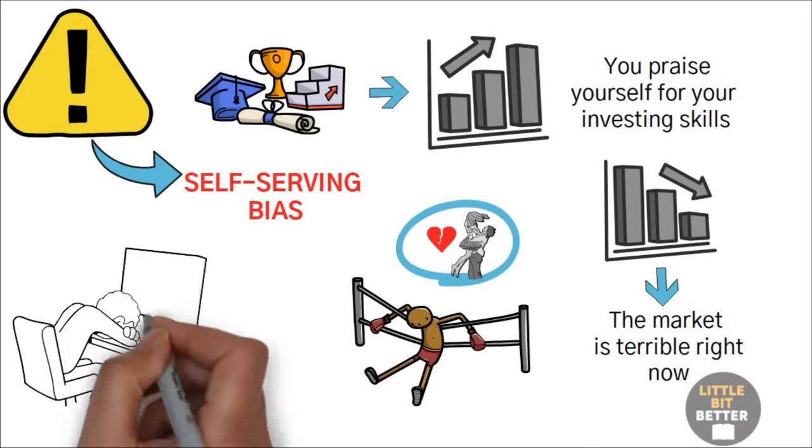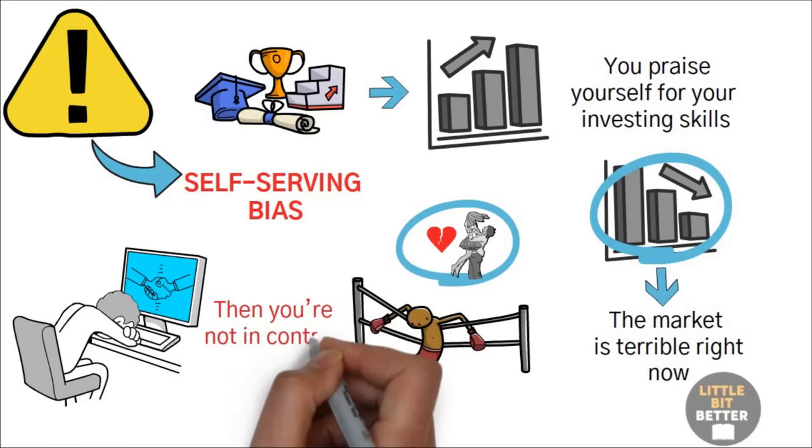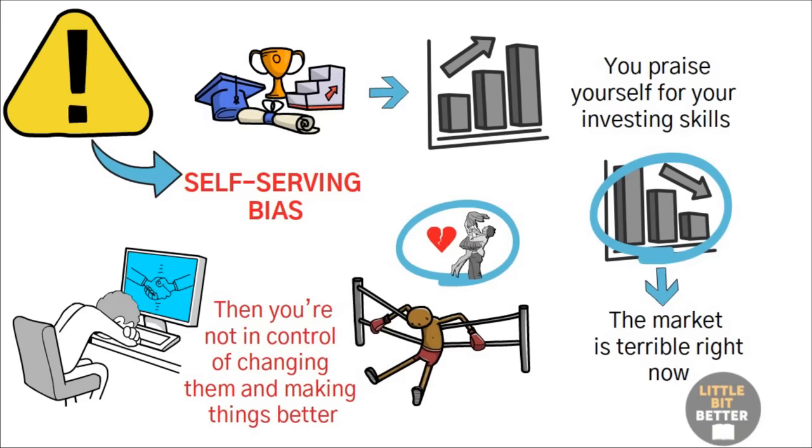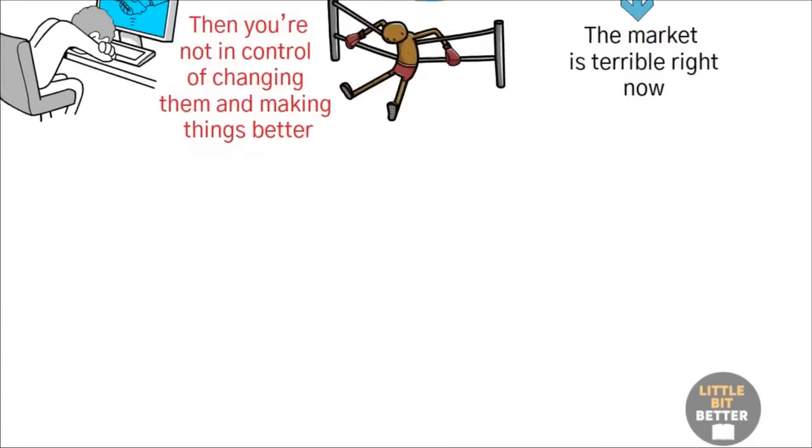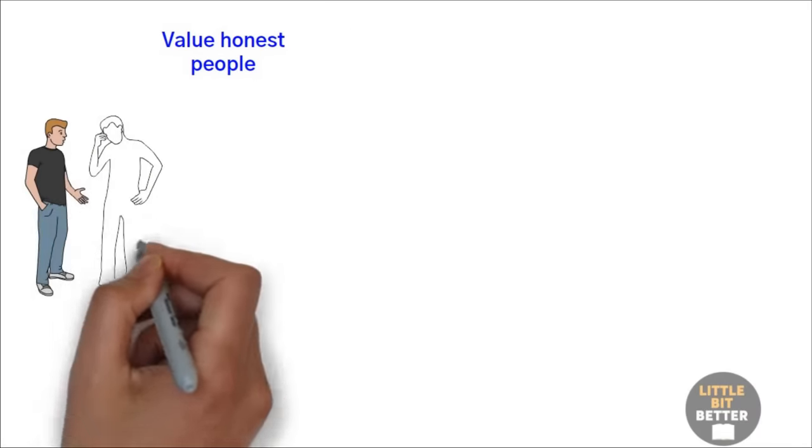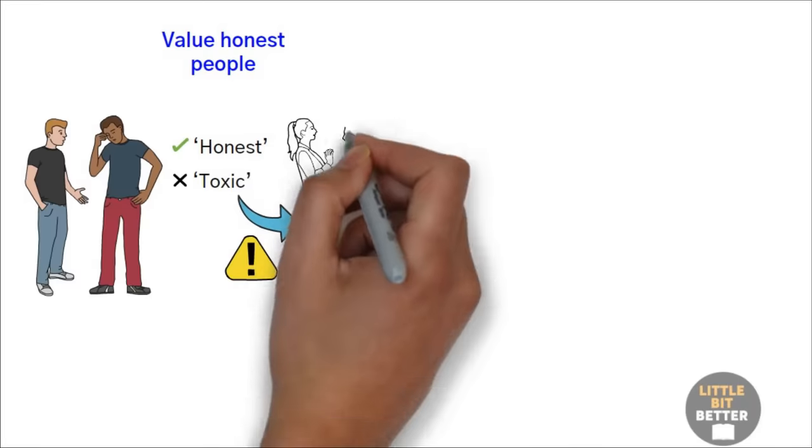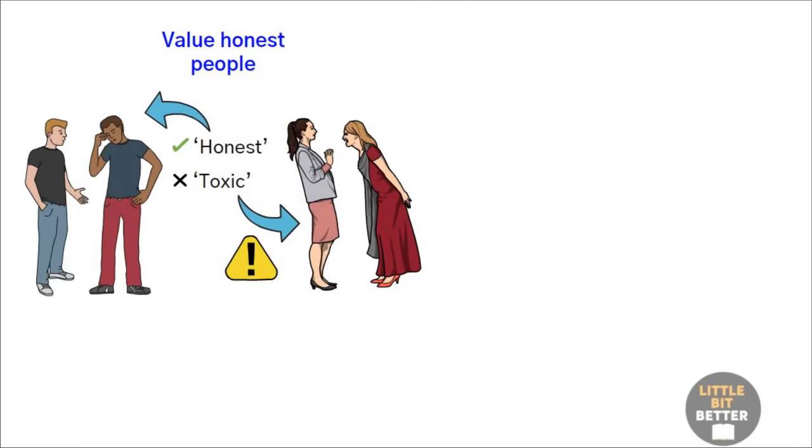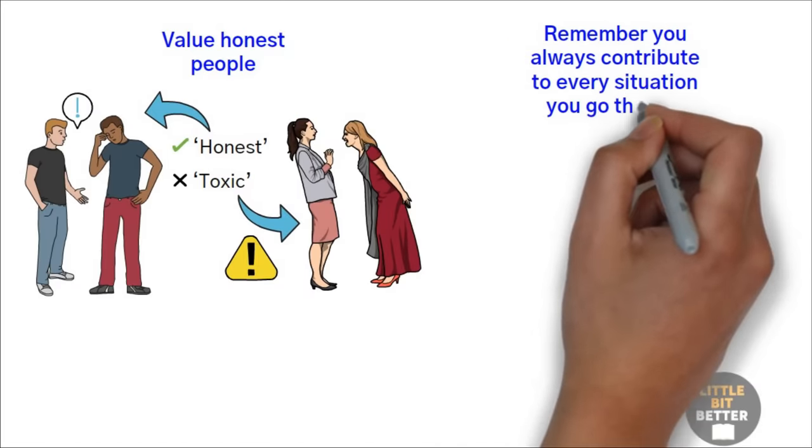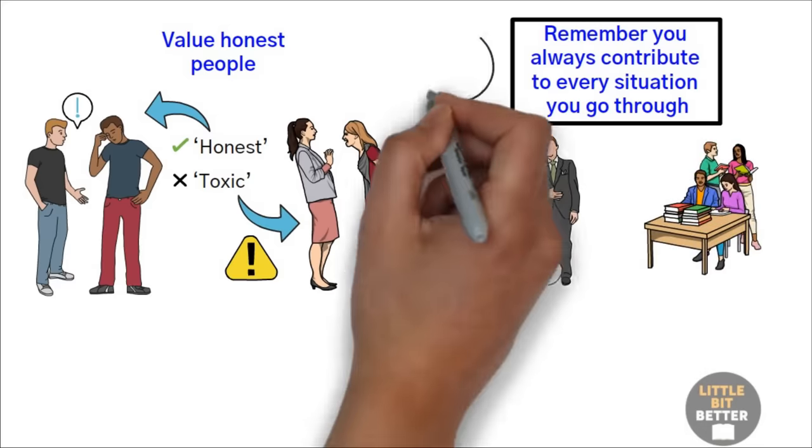If you often fall victim to this bias, it has terrible consequences that you don't always realize. It prevents you from taking responsibility for the negative events of your life. And if you're not responsible for them, then you're not in control of changing them and making things better. Here are two tips to help you avoid being harmed by self-serving bias. Value honest people. You know that friend who is maybe a little too honest? Keep them around. Keep in mind that honest is different from toxic. Toxic people will project their own flaws onto you. Honest people will be gentle and careful, but will still tell you things you don't want to hear. Remember, you always contribute to every situation you go through.